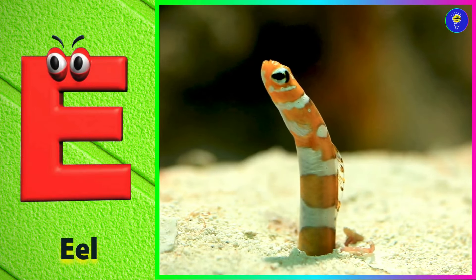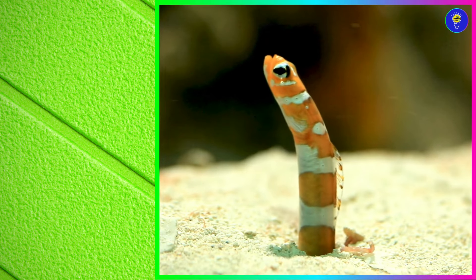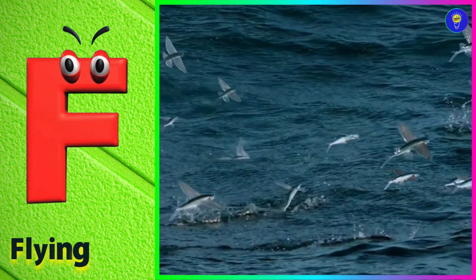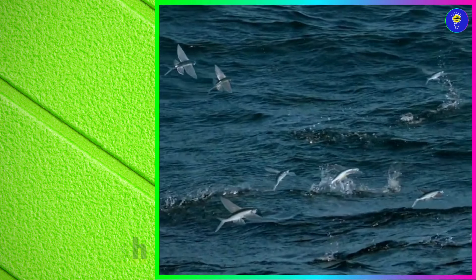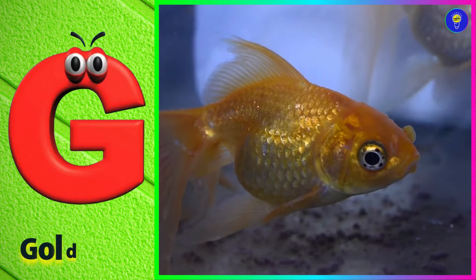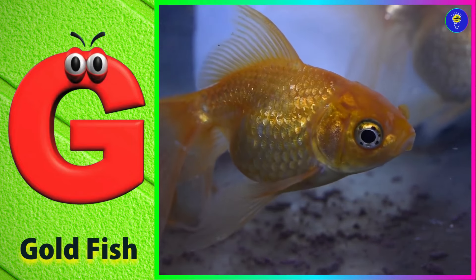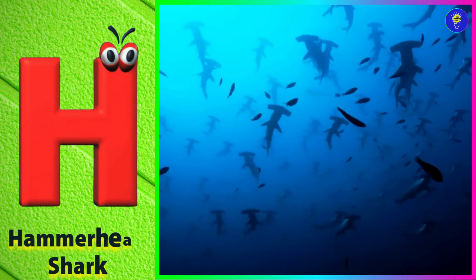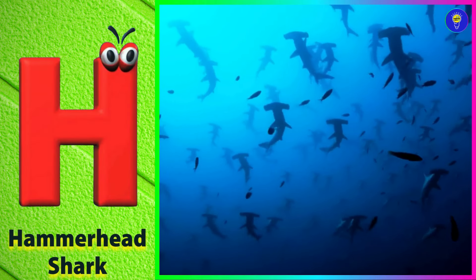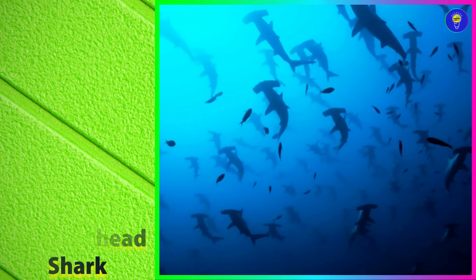E is for eel. F is for flying fish. G is for goldfish. H is for hammerhead shark.